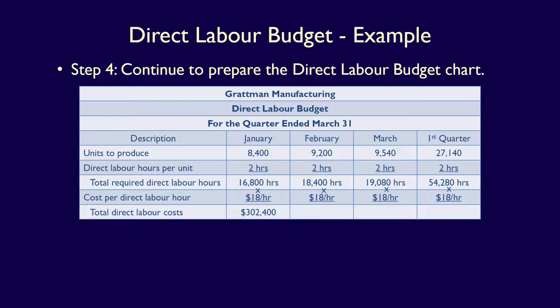We now do the multiplication for all months and the first quarter. For January: 16,800 hours × $18/hour = $302,400. For February: 18,400 hours × $18/hour = $331,200. For March: 19,080 hours × $18/hour = $343,440. And for the first quarter: 54,280 hours × $18/hour = $977,040.